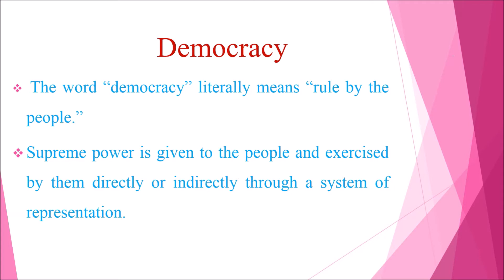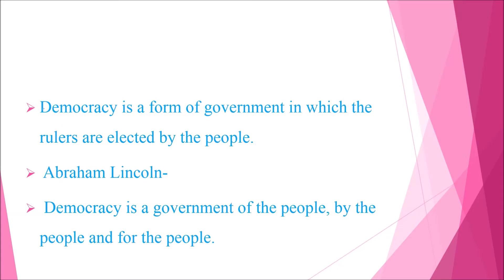First, we have to know what is meant by democracy. The word democracy literally means ruled by the people. Supreme power is given to the people and exercised by them directly or indirectly through a system of representation. Democracy is a form of government in which the rulers are elected by the people. According to Abraham Lincoln, democracy is a government of the people, by the people and for the people.